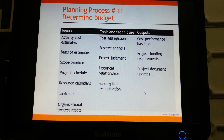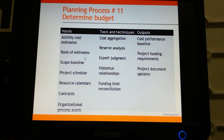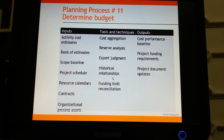Once costs are estimated, that becomes the baseline and then the budget. For determining budget, the inputs include activity cost estimates, basis of estimates, scope baseline, project schedule, resource calendars, contracts, and organizational process assets. The tools and techniques include cost aggregation, reserve analysis, expert judgment, and historical relationships based on historical data.